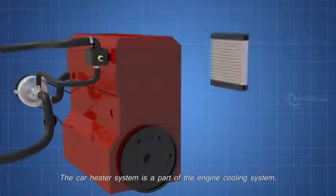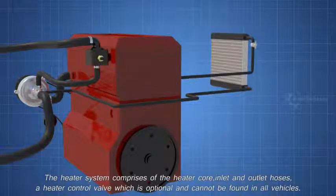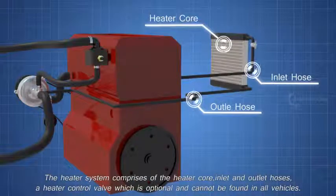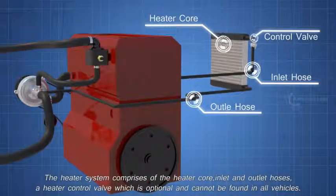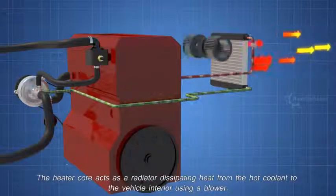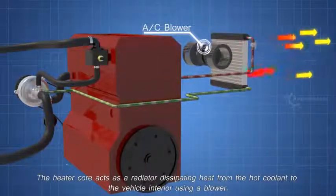The car heater system is a part of the engine cooling system. The heater system comprises of the heater core, inlet and outlet hoses, a heater control valve which is optional and cannot be found in all vehicles. The heater core acts as a radiator, dissipating heat from the hot coolant to the vehicle interior using a blower.